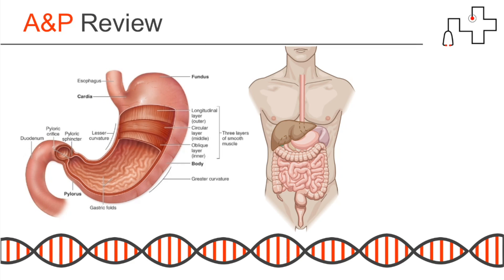The stomach contracts and mixes the food and acid together, churning around. Substances of small molecular size are absorbed there — such as water, alcohol, caffeine, and some medications taken by mouth — straight into your bloodstream. Chyme, which is the food mixture, then exits the pyloric sphincter and enters the duodenum. You have your esophageal sphincter limiting food from coming into the stomach, and your pyloric sphincter through which chyme moves into the duodenum. And here is where the pancreas, liver, and gallbladder connect to the digestive system.